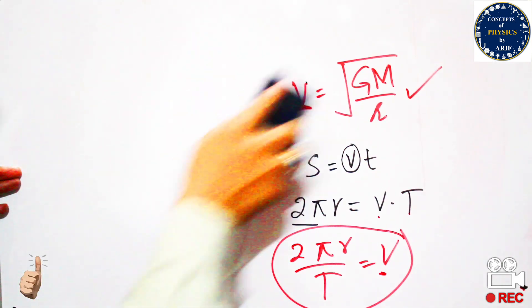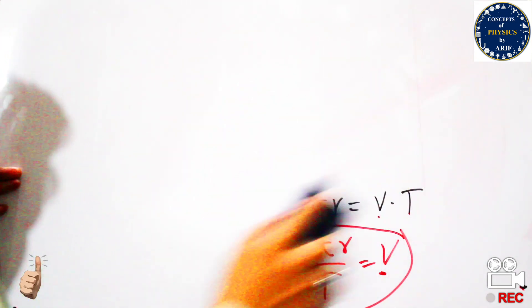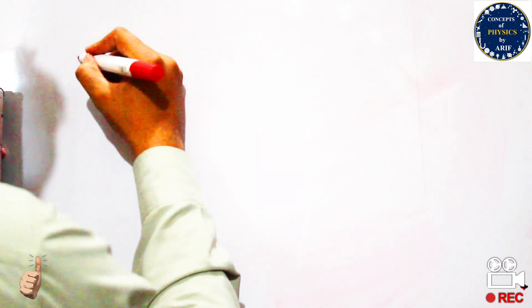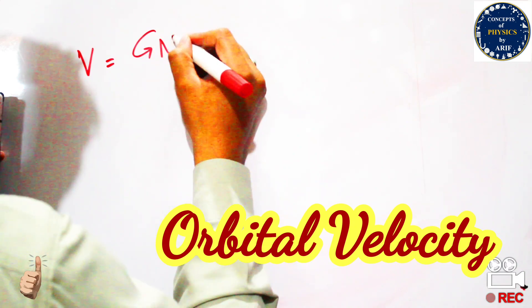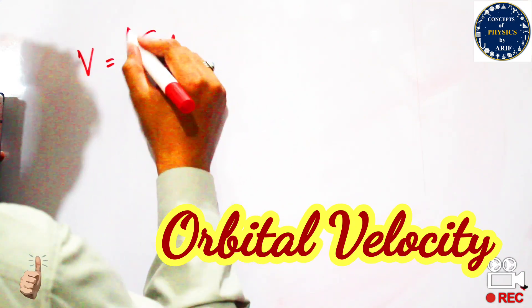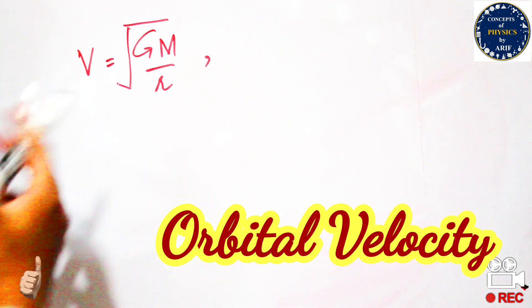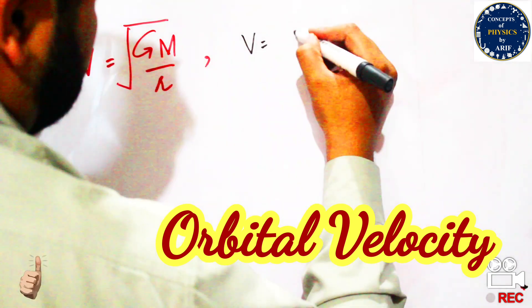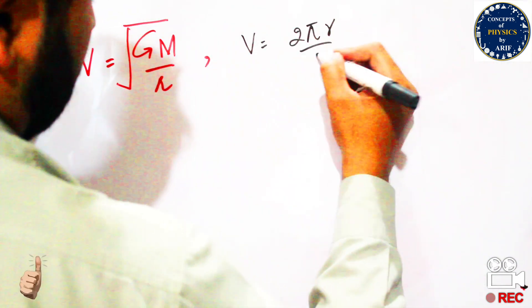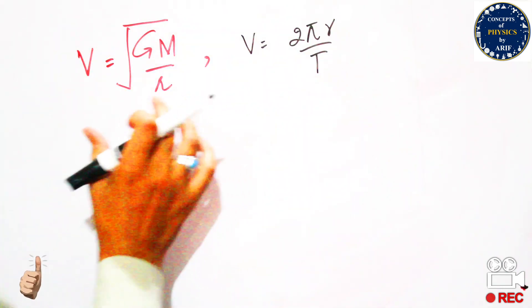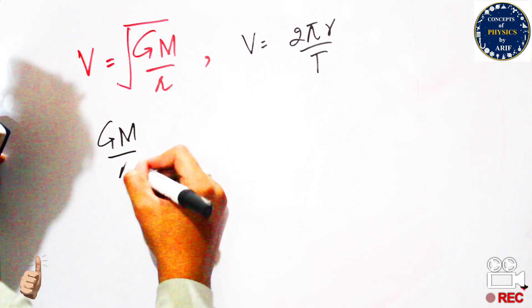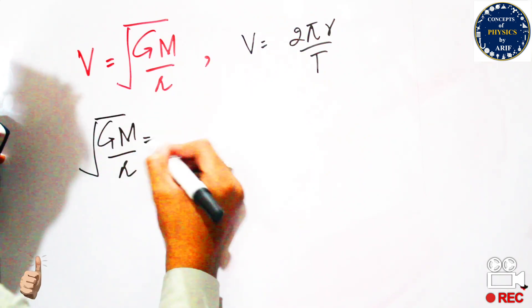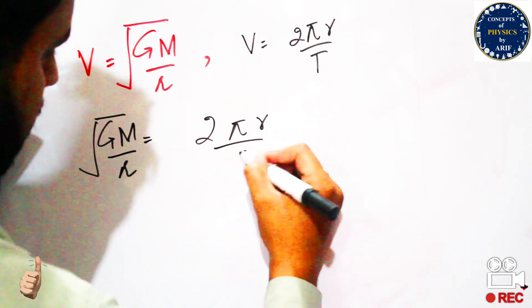We will equate these two velocities to get the radius — the distance between the Earth's center and the satellite. The orbital velocity of the satellite is the square root of GM over R, and the Earth's rotational velocity is 2πr over T. Setting them equal: square root of GM over R equals 2πr over T.